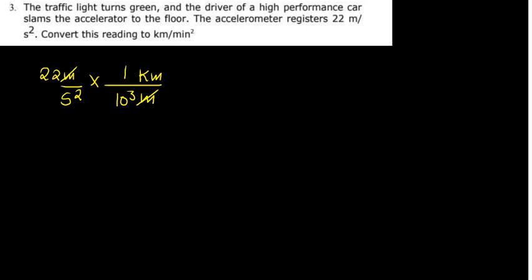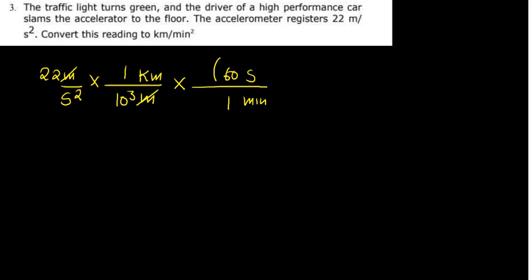Now what remains is to convert seconds squared to minutes squared. We're going to multiply. Since we've got a second squared down, we're going to put a second on top and then a minute down. We know that in one minute we've got 60 seconds. But notice that this is not a second — it's a second squared. So I'm going to take the whole conversion factor and square it.